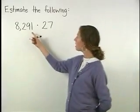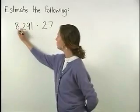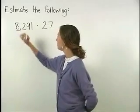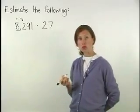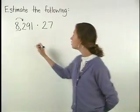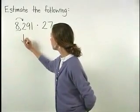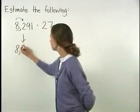To round 8,291 to the nearest thousand, since the digit to the right of the rounding place is two, we round down. So 8,291 rounds down to 8,000.